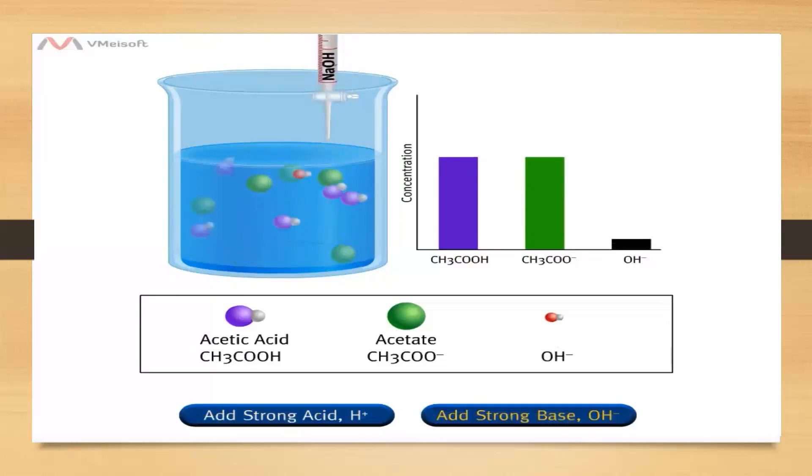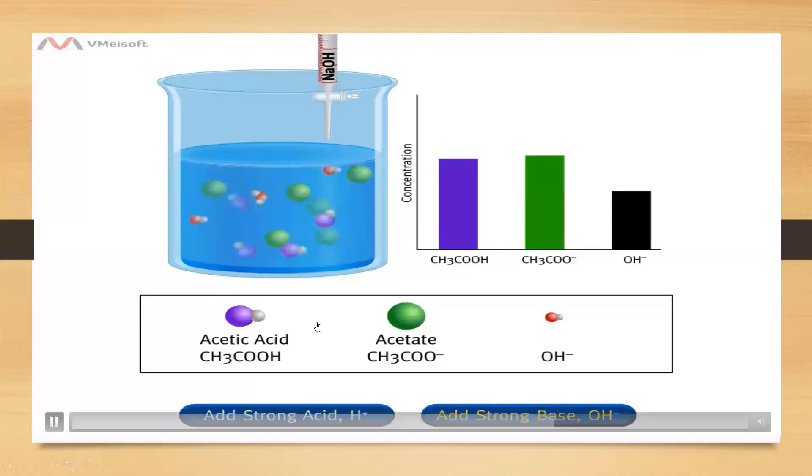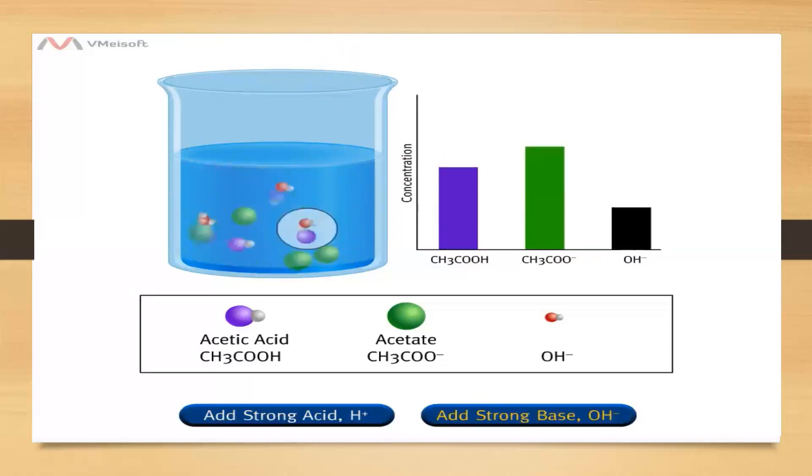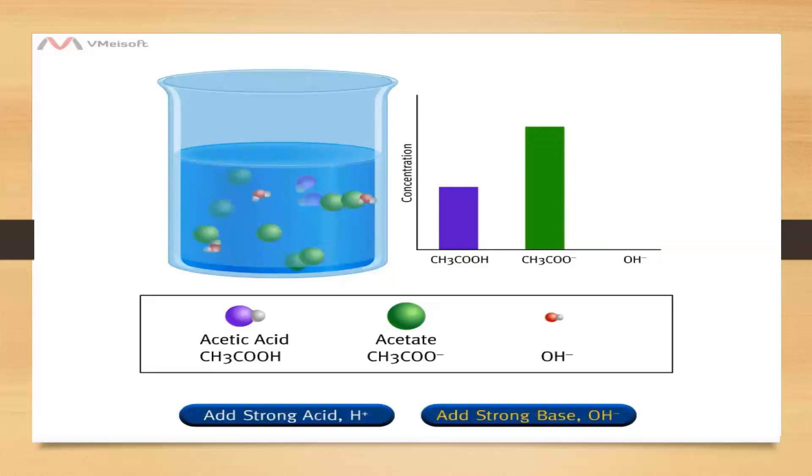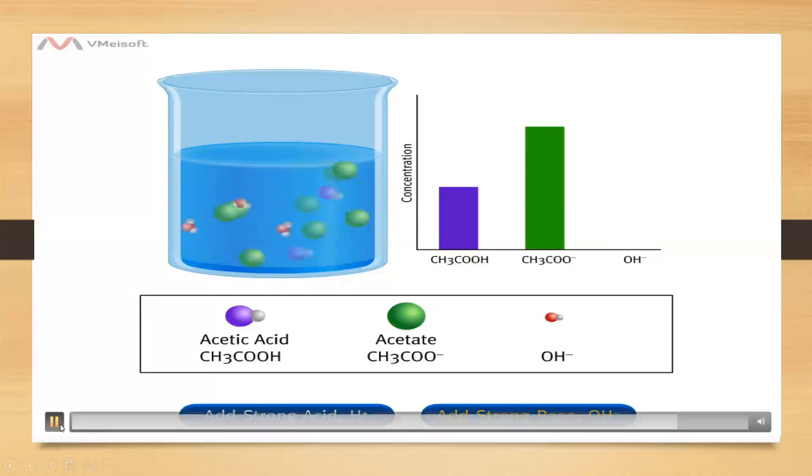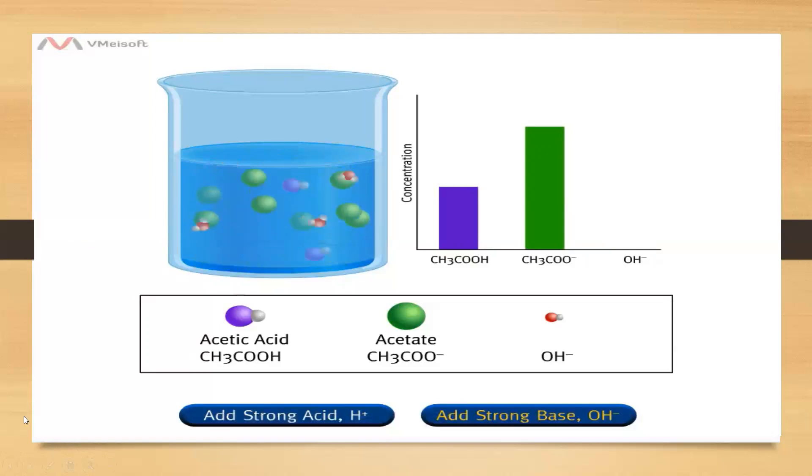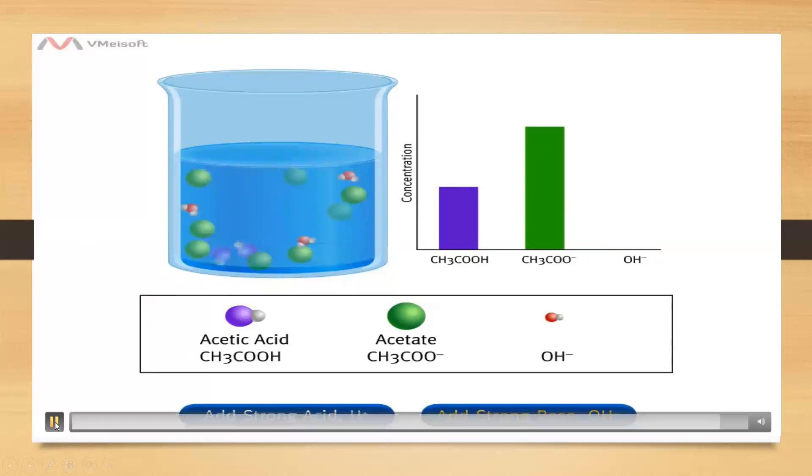Only hydroxide ions, OH-, from the strong base sodium hydroxide are shown entering the solution. Sodium ions are not shown because they are spectator ions. They do not participate in the reaction. The strong base hydroxide (OH-) reacts with the acid component of the buffer, acetic acid (CH3COOH), producing the base component of the buffer, acetate (CH3COO-), and water. This buffer has resisted a change in pH by removing the strong base hydroxide from the solution.